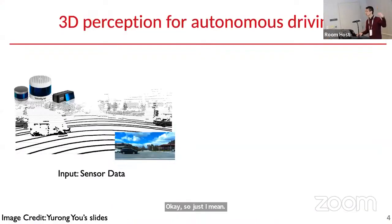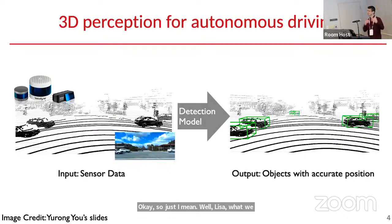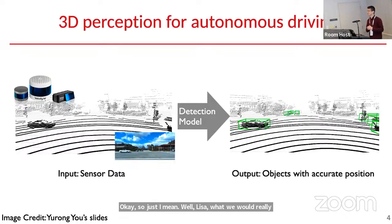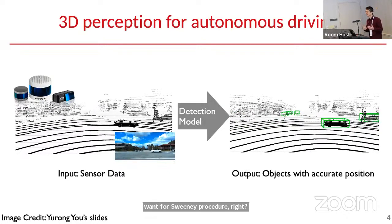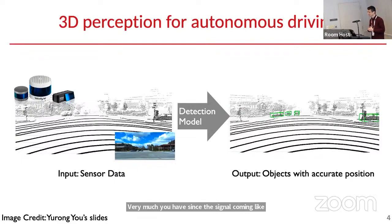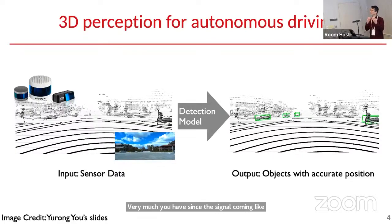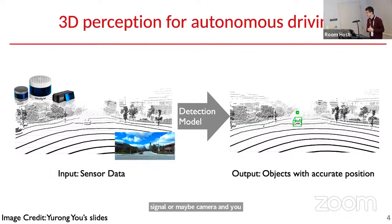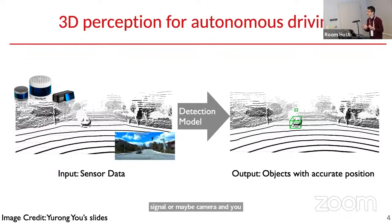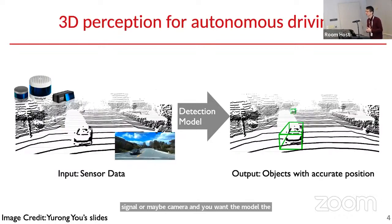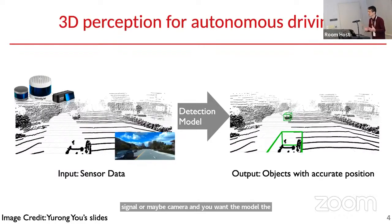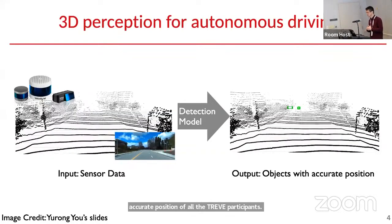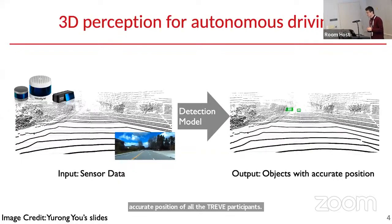This is what we really want for 3D perception: you have sensor signals coming in like LIDAR or camera, and you want the detection model to output very accurate positions of all the traffic participants. This is the goal we want to achieve.